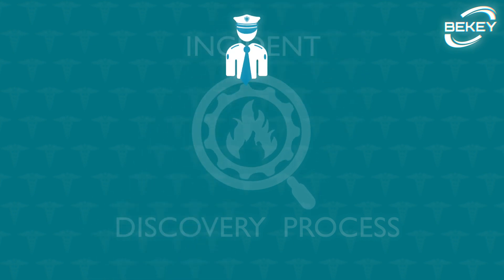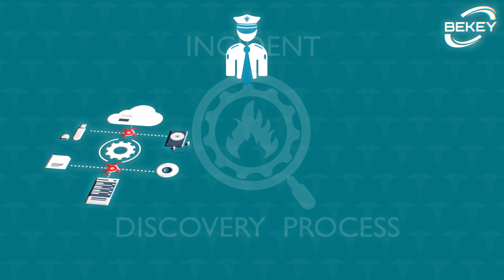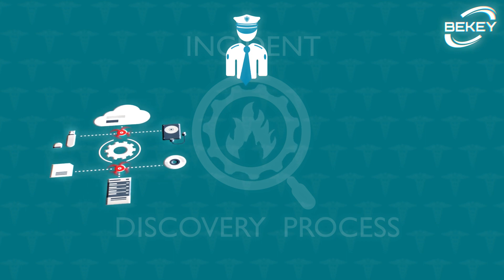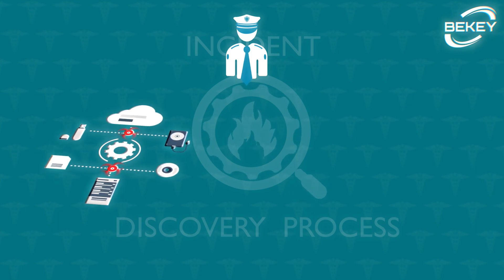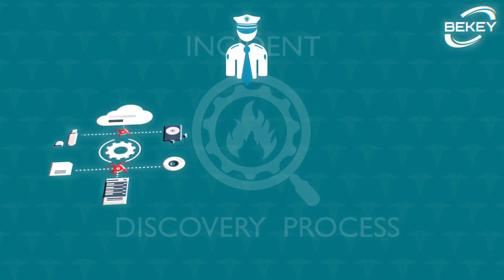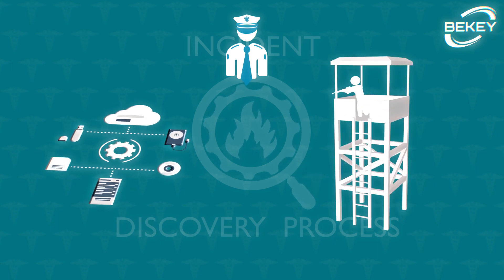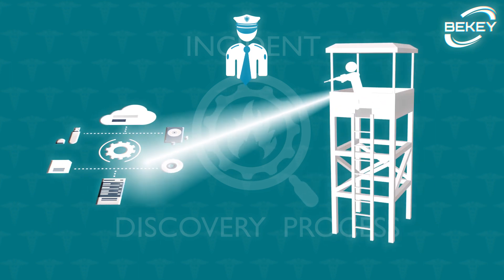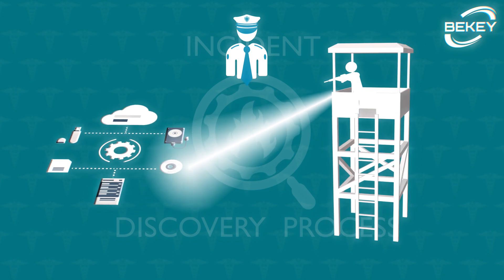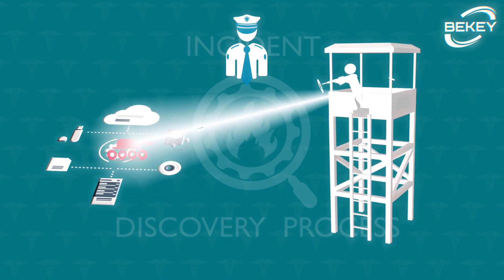Establishing incident management processes, security officers find out about every vulnerability your software and hardware have or might have, and find ways to mend them. They install tools to track events that happen in your system to discover unexpected behaviors and possible attacks.